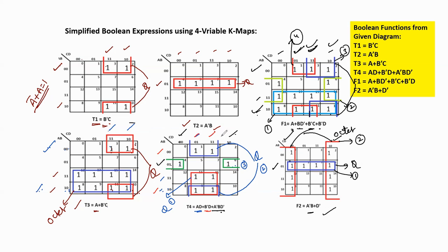Now we compare all these K-map simplified expressions with the expressions obtained from the circuit diagram and Boolean algebra. When we compare these two, both are the same. Therefore our answer is correct.